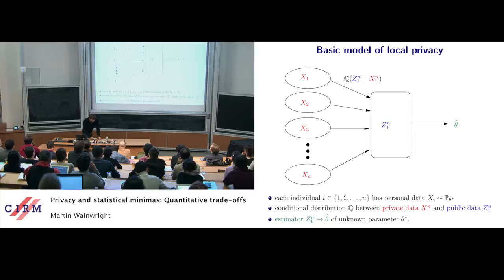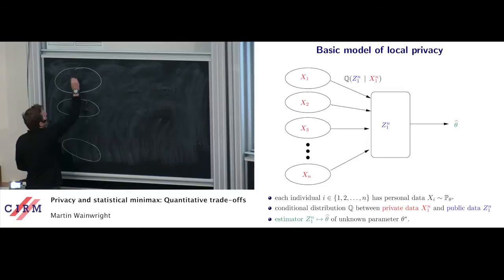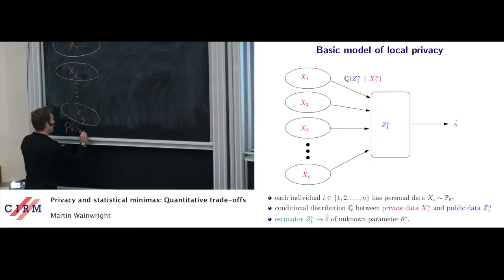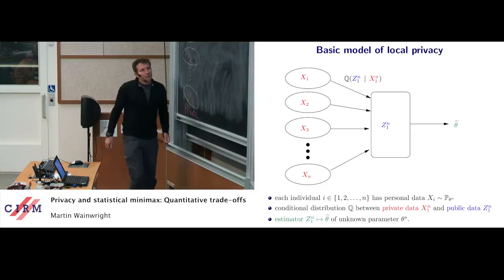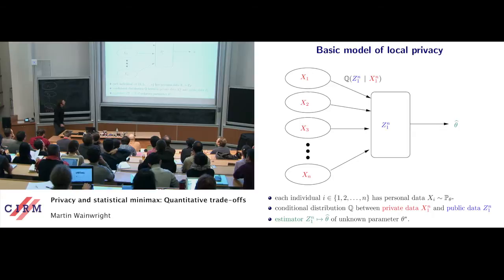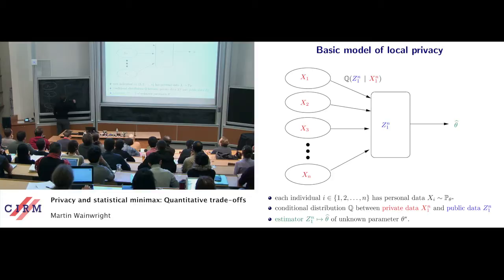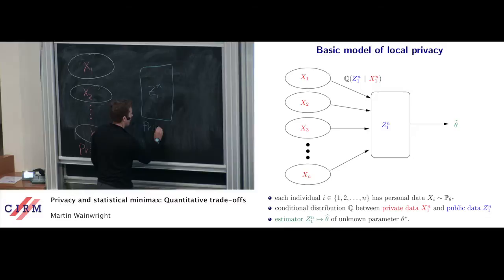Let me write the model on the board. On the left you have the individual units: x1 through xn. We have n individuals, and these x's are random variables representing the data that's supposed to be private. Then we have what we call a channel — motivated by information theory terminology — which is a conditional distribution between this random vector x1 through xn and, at some central location, the privatized version of the data z1 through zn.